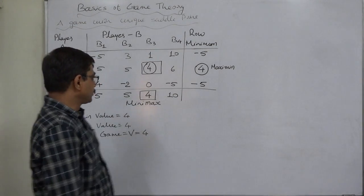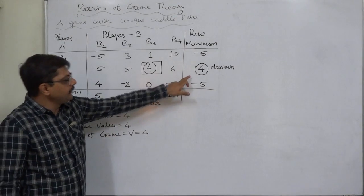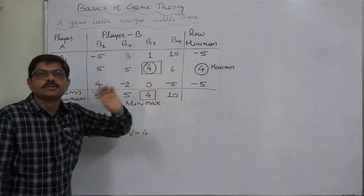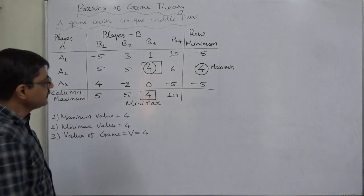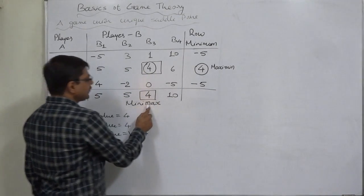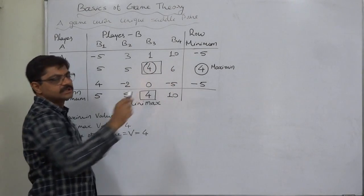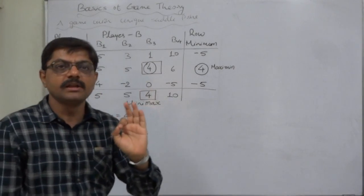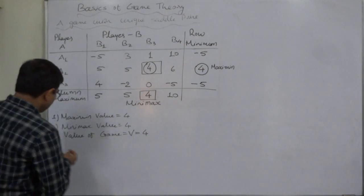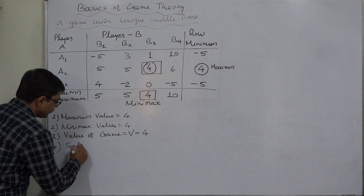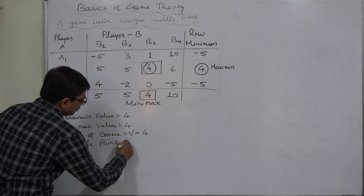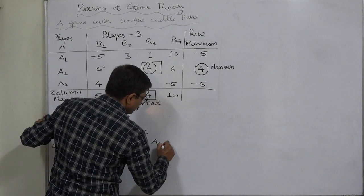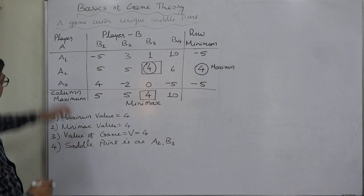Now, what about the geographical location? If the minimax value and maximin value are equal and situated at the same location in the payoff matrix, that point is known as the saddle point. Since both values are 4 and that 4 is situated at only one place, this is called a game with a unique saddle point. The saddle point is situated at A2, B3.